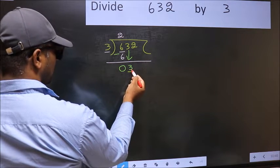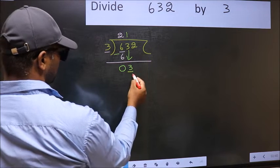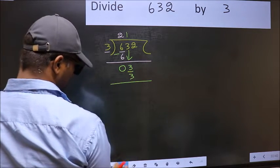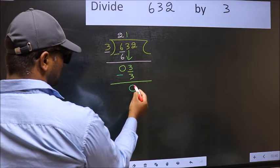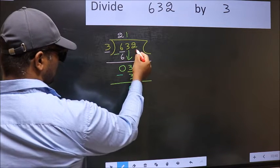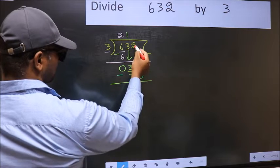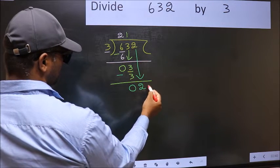Now 3. When do we get 3 in the 3 table? 3 once, 3. Now you should subtract. 3 minus 3, 0. After this step, bring down the beside number. So, 2 down.